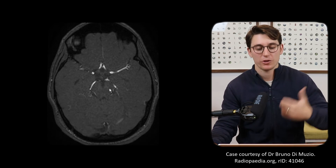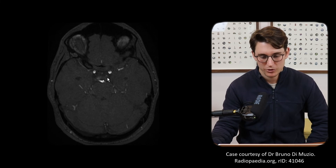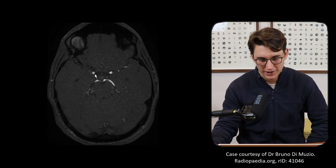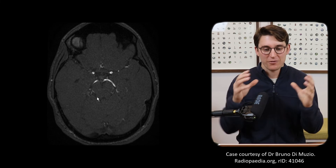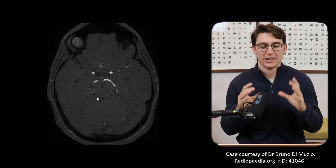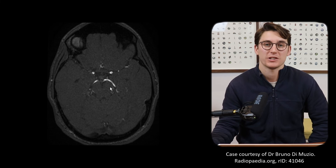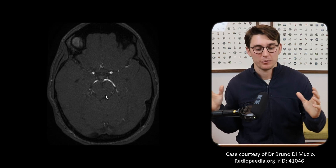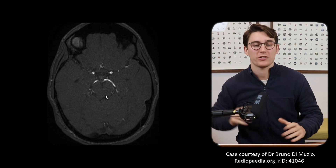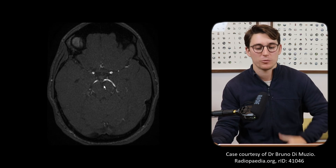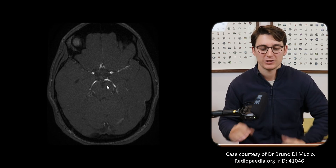That's our posterior circulation covered. We can just faintly see our posterior communicating artery on one side and even more faint on the other. Very few people have a perfect circle of Willis - there's lots of variation, and a large majority of that variation happens in the posterior communicating artery. We might have large calibre posterior communicating arteries with quite inequality between the two sides, and as you go through more scans you'll start to notice that this size differential is largely normal.